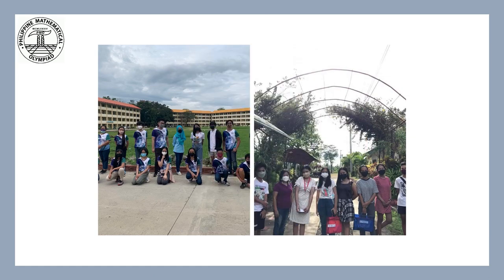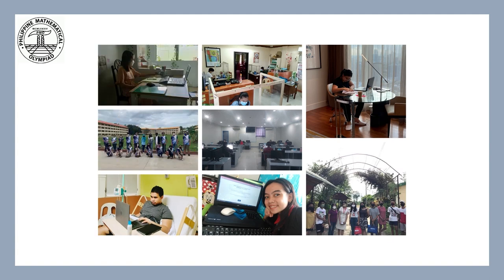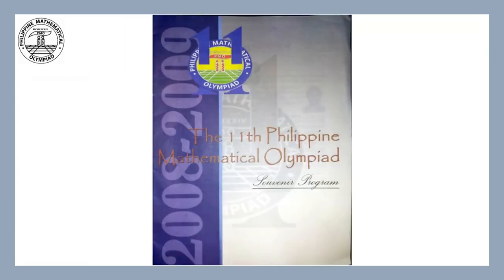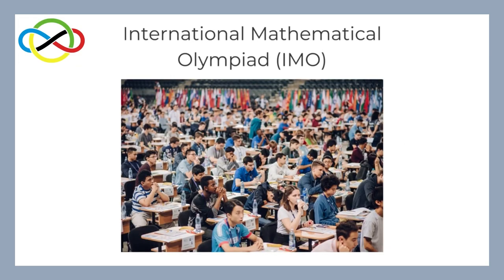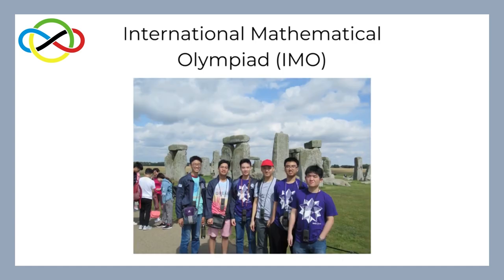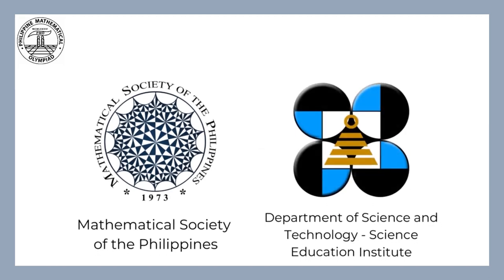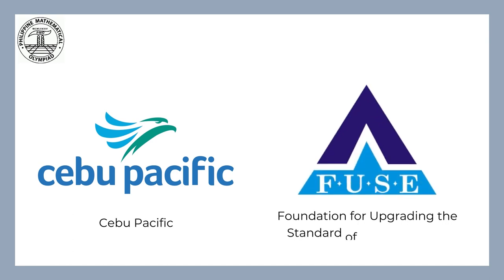Now in its 25th year — its silver anniversary — the Philippine Mathematical Olympiad is going back on-site in various test centers across the country after two years of online competitions. After its trial run in 1984, it was officially launched in 1986 and has been held annually since 2007. The country's contestants to the International Mathematical Olympiad are chosen from the top students who compete in the Philippine Mathematical Olympiad. The PMO is a project of the Mathematical Society of the Philippines and the Department of Science and Technology Science Education Institute, with official airline partner Cebu Pacific, and major sponsor Foundation for Upgrading the Standard of Education, Inc.